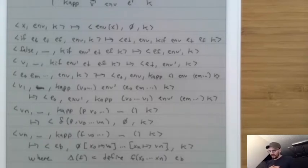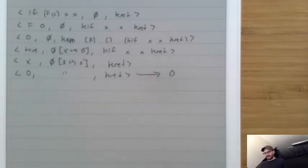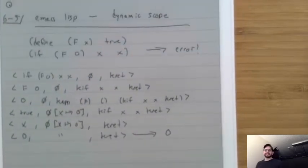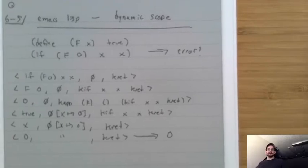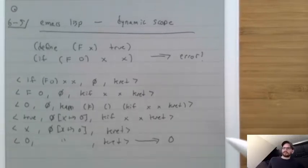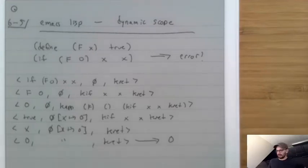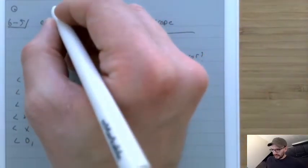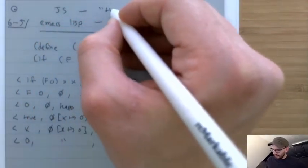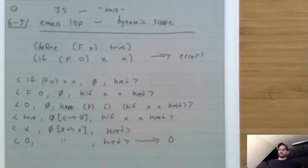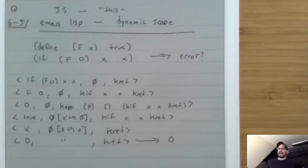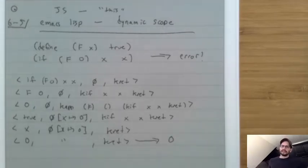This is the correct CEK machine — it does not have dynamic scope because we correctly store all old versions of environments. One more note: although mainly unusual languages like Emacs Lisp have dynamic scope, many other languages have it for specific variables. In JavaScript, Python, Ruby, Perl, PHP and others, a few specific variables are dynamically scoped. In JavaScript, the 'this' variable is dynamically scoped, which you can accidentally discover if you call a method with function-call syntax instead of method-call syntax.